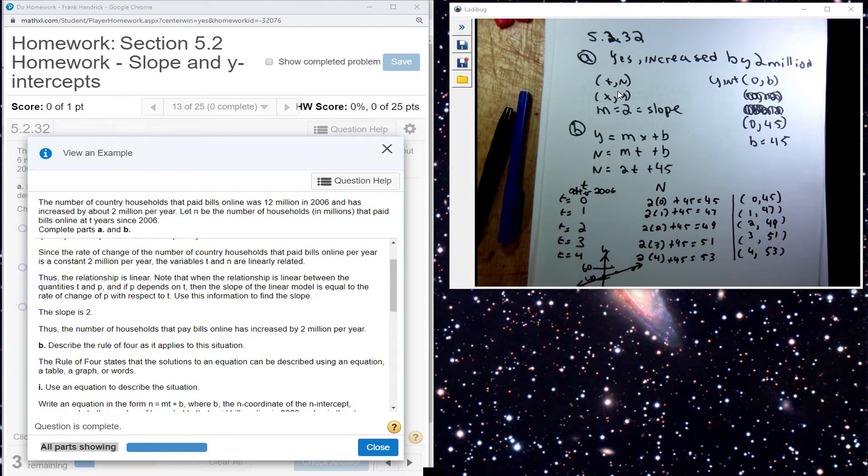You can see that my input is T for years and my output is N for the number of households. My X and Y, my slope here is 2. Initially when I start out, there were 45 million that paid households online.